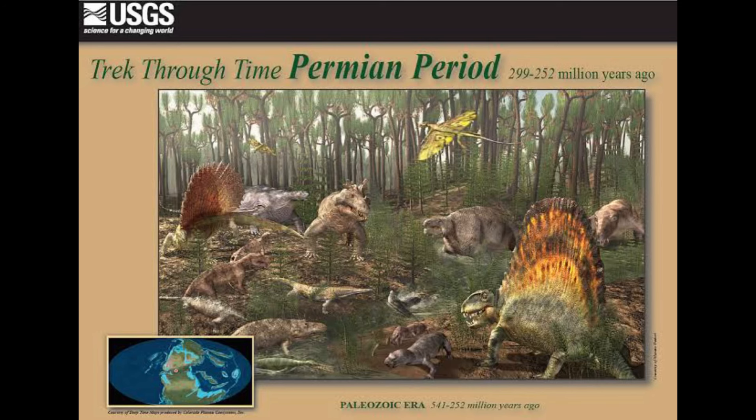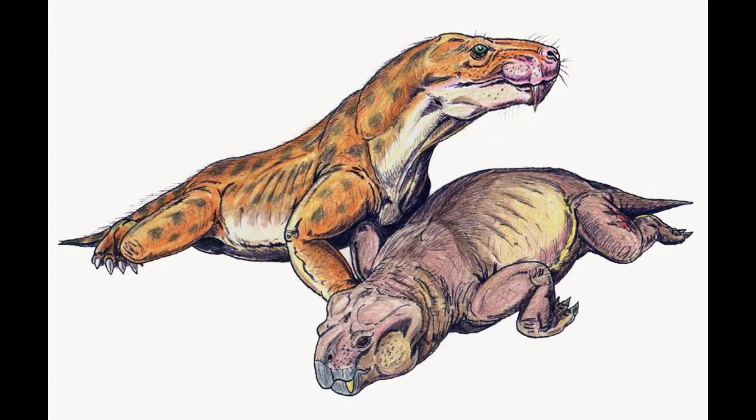Then we come to the Permian period, which lasted from about 299 to 252 million years ago — a crucial era for synapsid evolution. During this time, Earth's climate became drier and more seasonal, driving significant ecological changes. Pelicosaurs began to decline and a more advanced group of synapsids, the therapsids, rose to prominence.